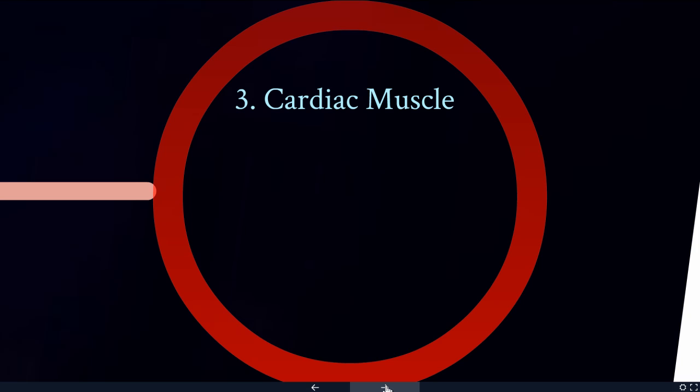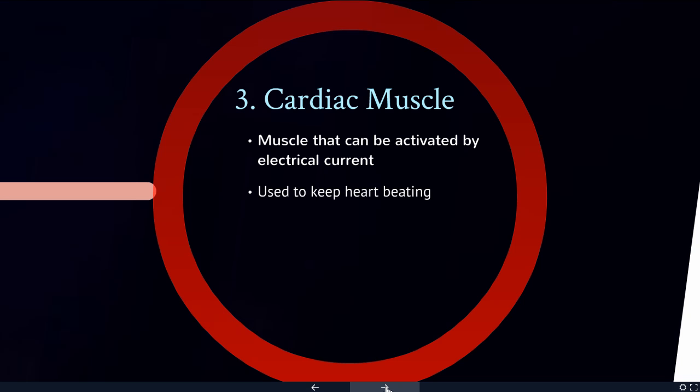Cardiac muscle is very specialized muscle found only in the heart. It's activated by an electrical current — your heart has its own little pacemaker that sends out an electrical impulse, causing these muscles to contract in a rhythmic way for hopefully 85 to 95 years of your life. Like smooth muscle, cardiac muscle is not under conscious control; it's controlled by a part of our brain we don't necessarily think about, and it happens automatically.